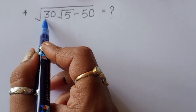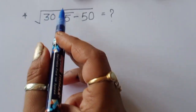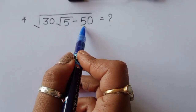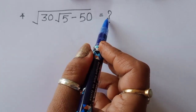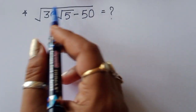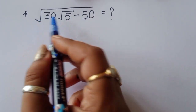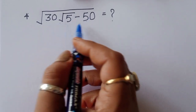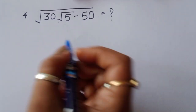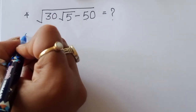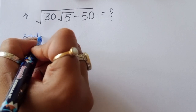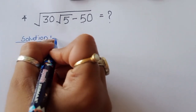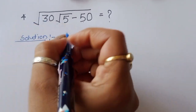We are given square root of 30 under the square root of 5 minus 50, and we have to find out the value of this term. A double square root is given and the number looks a bit difficult, so let's see the solution without using a calculator.